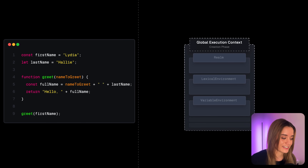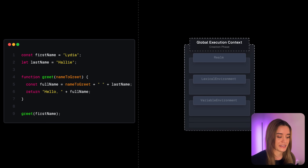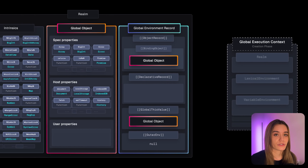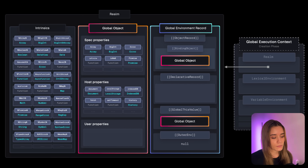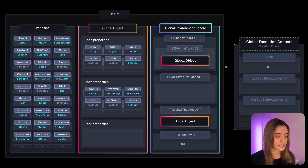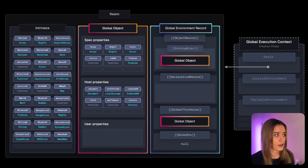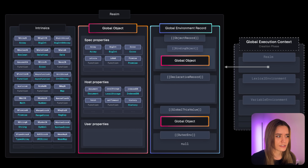The global execution context has many components, but for now I want to focus on the realm, the lexical environments, and the variable environment. The realm points to a realm record, and a realm is essentially an isolated environment in which our code runs. In browsers, a new realm is created whenever we open a new tab, refresh a page, use service workers, web workers, iframes, and so on.